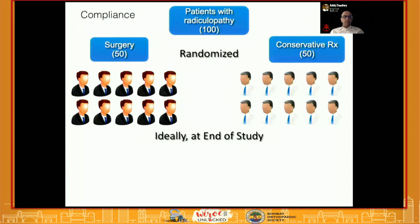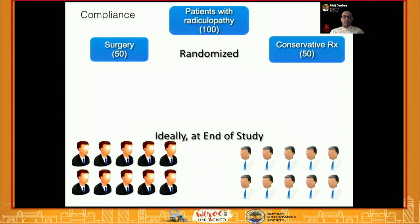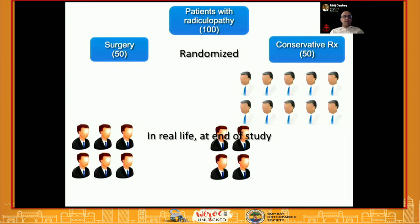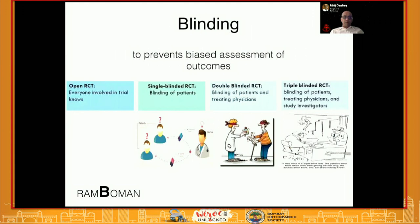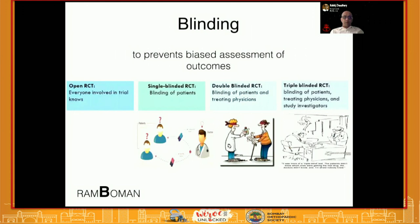Compliance is also important. If you randomize patients into surgery and conservative groups, ideally those assigned to surgery stay in the surgery group and those in the conservative group stay there. However, in real life, some patients from the surgery group cross over to the conservative side, and significantly disabled conservative group patients may change their mind and move into the surgery group. This is called a crossover, and it should be minimized as much as possible.